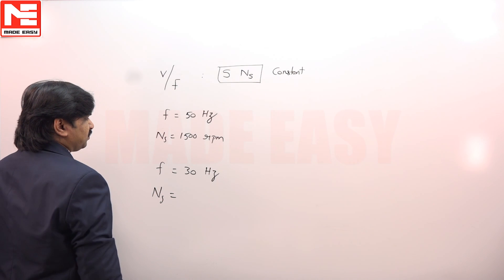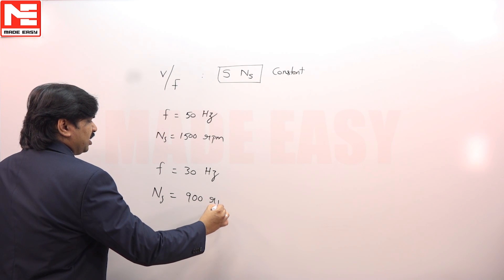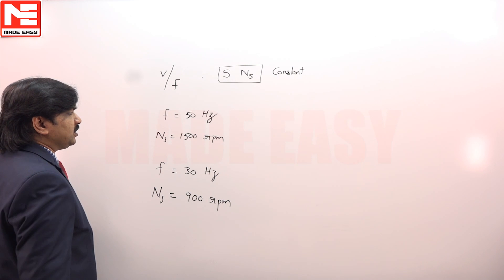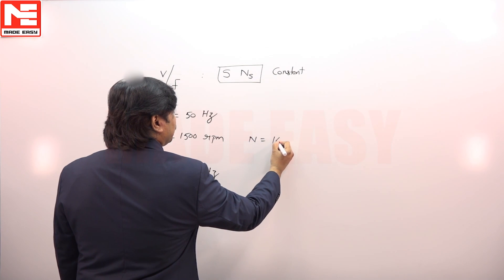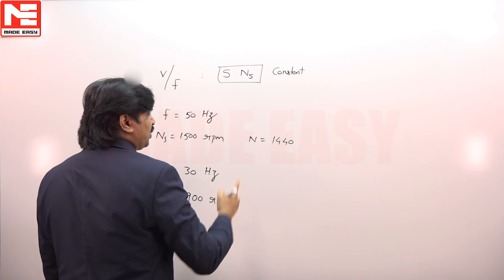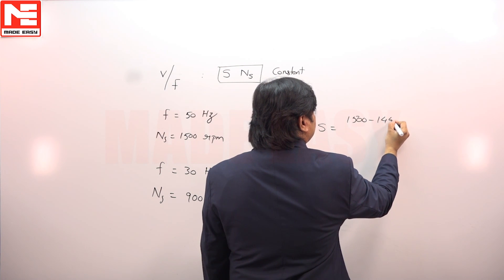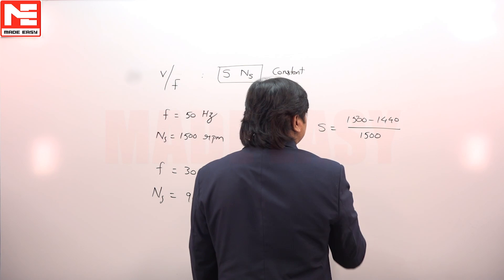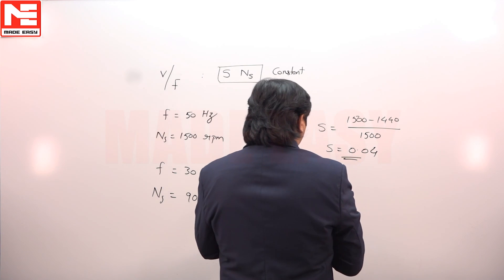What is Ns? Means 900 RPM because it is given as a 4-pole machine. N is given as 1440. From this, if you calculate slip: S = (Ns - N) / Ns, S is 0.04.